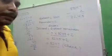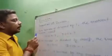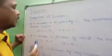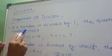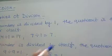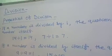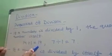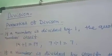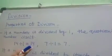There are some properties of division. Note them down properly. The first property: if a number is divided by 1, the quotient is the number itself. For example, 14 divided by 1 — our quotient will be 14.